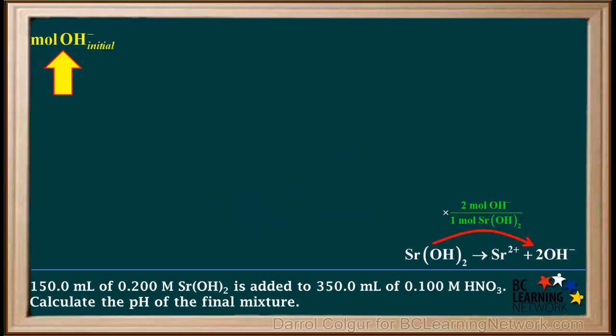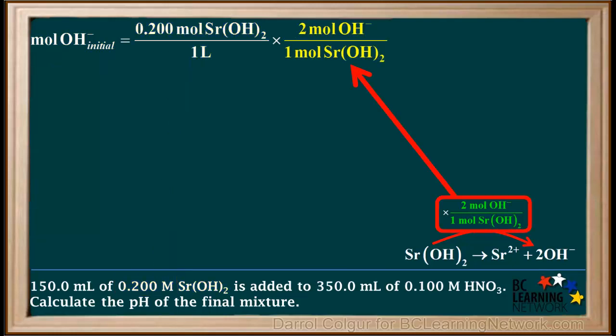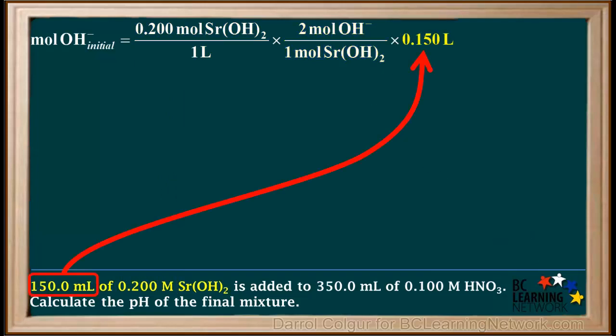We'll start by calculating the initial moles of OH⁻ added. We take 0.200 moles of Sr(OH)₂ per liter, multiply it by the conversion factor 2 moles of OH⁻ over 1 mole of Sr(OH)₂, and by 0.150 liters. We rounded this to three significant figures to save room here. The concentration 0.200 moles per liter is only three significant figures, so the answer to this calculation is limited to three significant figures.